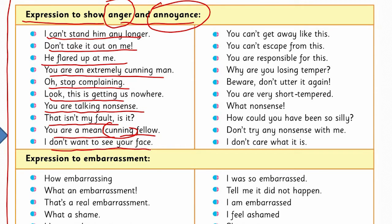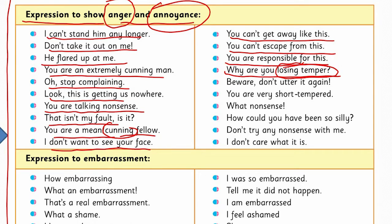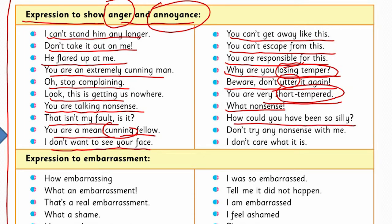'That isn't my fault, is it?' 'You are a mean, cunning fellow.' Cunning — chalak hona. 'I don't want to see your face.' Expressions for annoyance: 'You can't get away like this,' 'You can't escape from this,' 'You are responsible for this,' 'Why are you losing temper?' — tum apna sabar kyun kho rahe ho. 'Beware, don't utter it again.' Utter bolne ko kehte hain. 'You are very short-tempered.' Short-tempered — khusile mizaj ka bolte hain, jo bohot zyada khusa ho jaata hai. 'What nonsense!' 'How could you have been so silly?' 'Don't try any nonsense with me,' 'I don't care.'